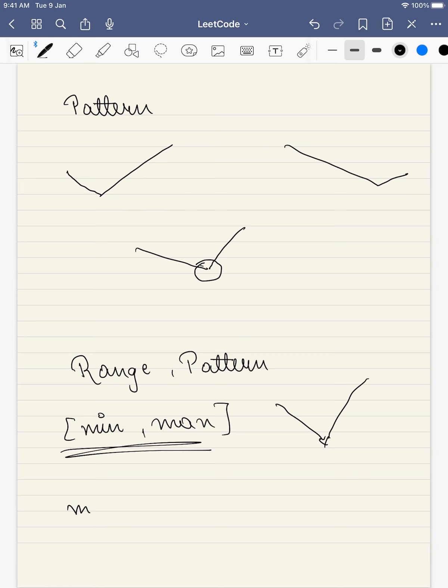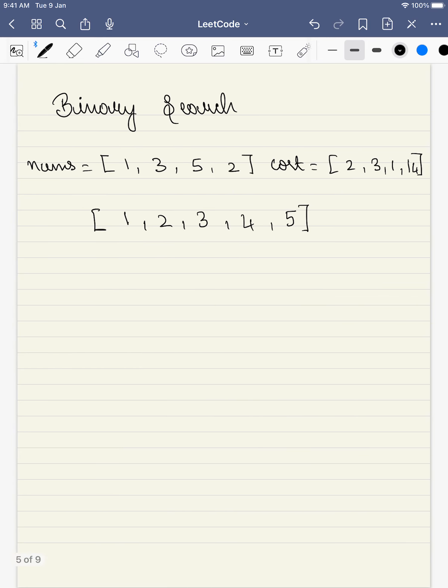How do we use binary search? First, we will set our range to min and max. For example, in the first case, let's take left equal to 1, right equal to 5.